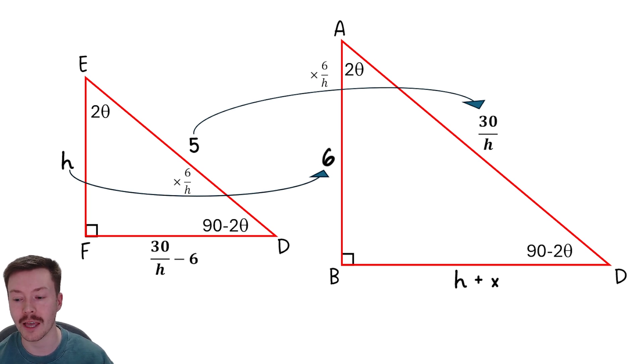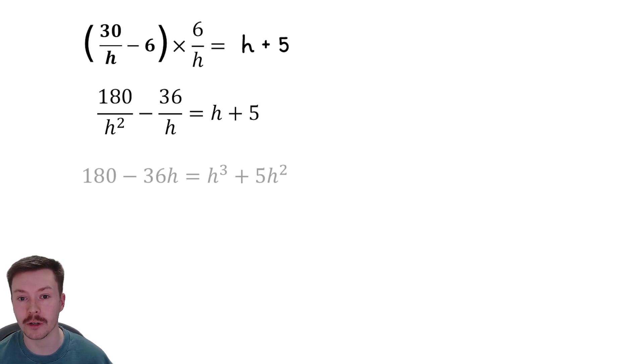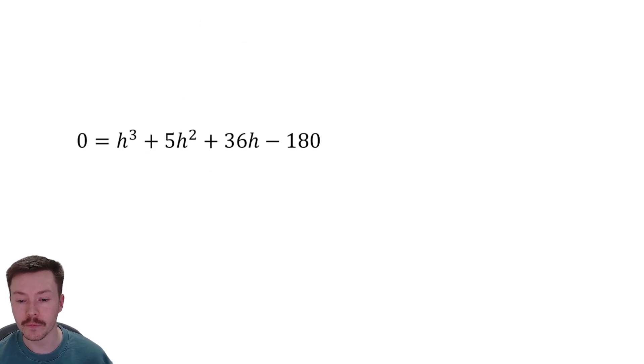So on the side length here, B to D, I can replace that X with 5. Okay, so that length is now H plus 5. Now, as you might want to do or you might expect, I'm going to use the scale factor once more for these sides at the bottom. So 30 over H minus 6, times by 6 over H, gives us H plus 5. Now we're going to need to do a little bit more working out with this one than we did on the last equation. So multiply through by 6 over H, we get this. Times everything now by H squared to get rid of our denominators, and get everything onto one side so it's equal to zero, we get this cubic.